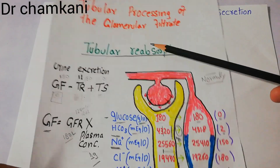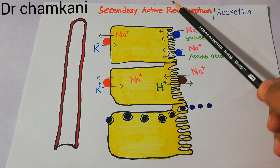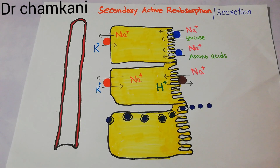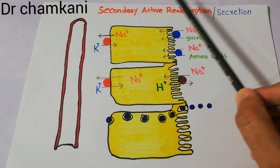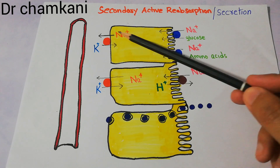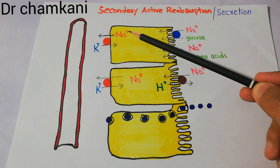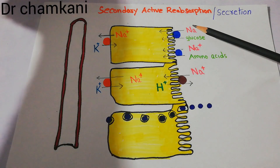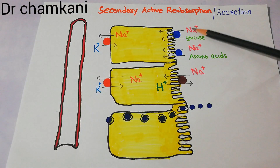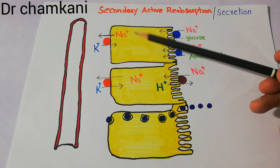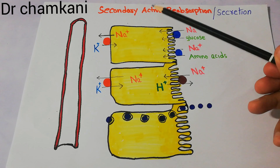The reabsorption process is called tubular reabsorption, which is either active or passive. Active reabsorption requires energy; passive reabsorption does not. Active reabsorption is further divided into primary and secondary active reabsorption. In primary active reabsorption, ATP is directly broken down by the sodium-potassium ATPase, which throws sodium out of the cell, creating a deficiency that draws sodium from the tubule lumen back into the cell.